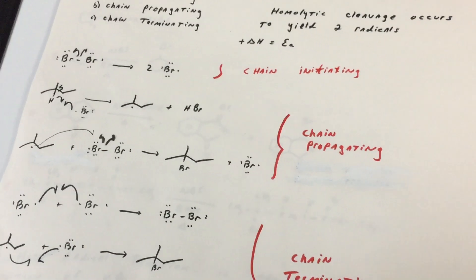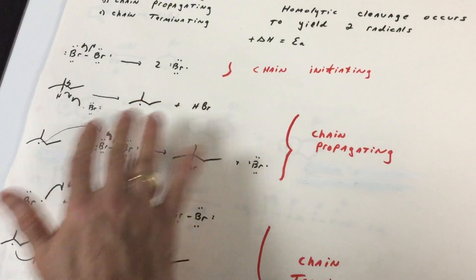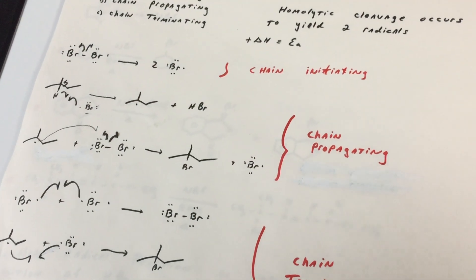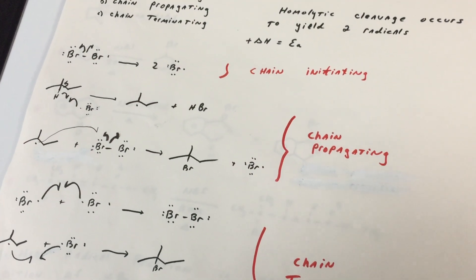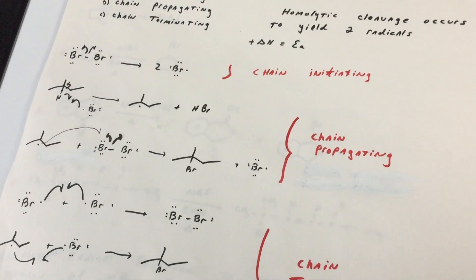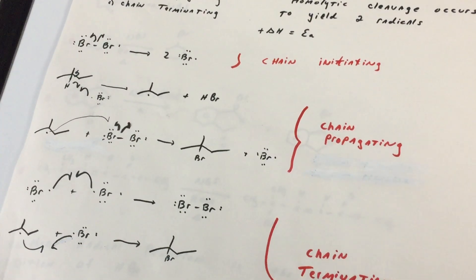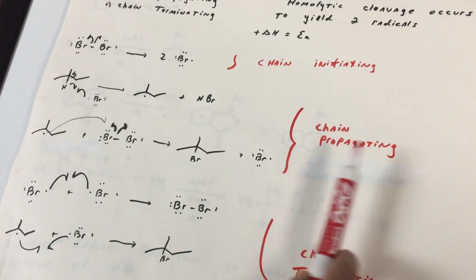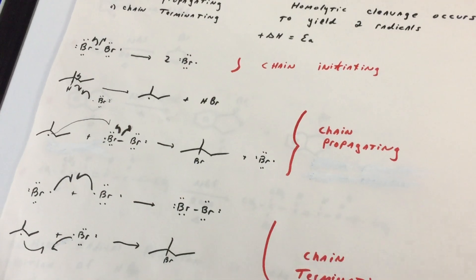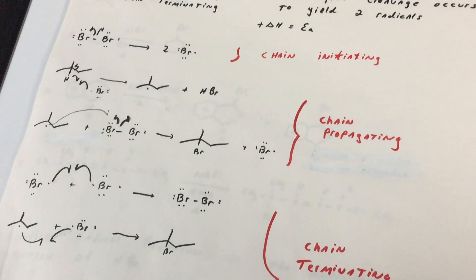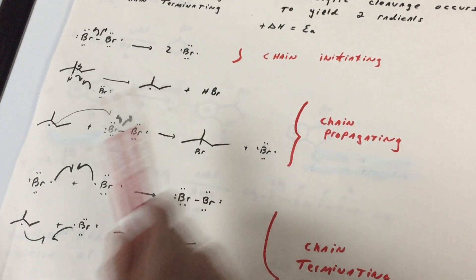The chain propagating step, as you can see, there's two of them in this example. All you got to do is be able to recognize which step is chain initiating. And don't forget, chain initiating is the step that's endothermic, most endothermic. Propagating steps can be endo or exothermic. I'm not going to kill you on that, but at least understand how to recognize them.